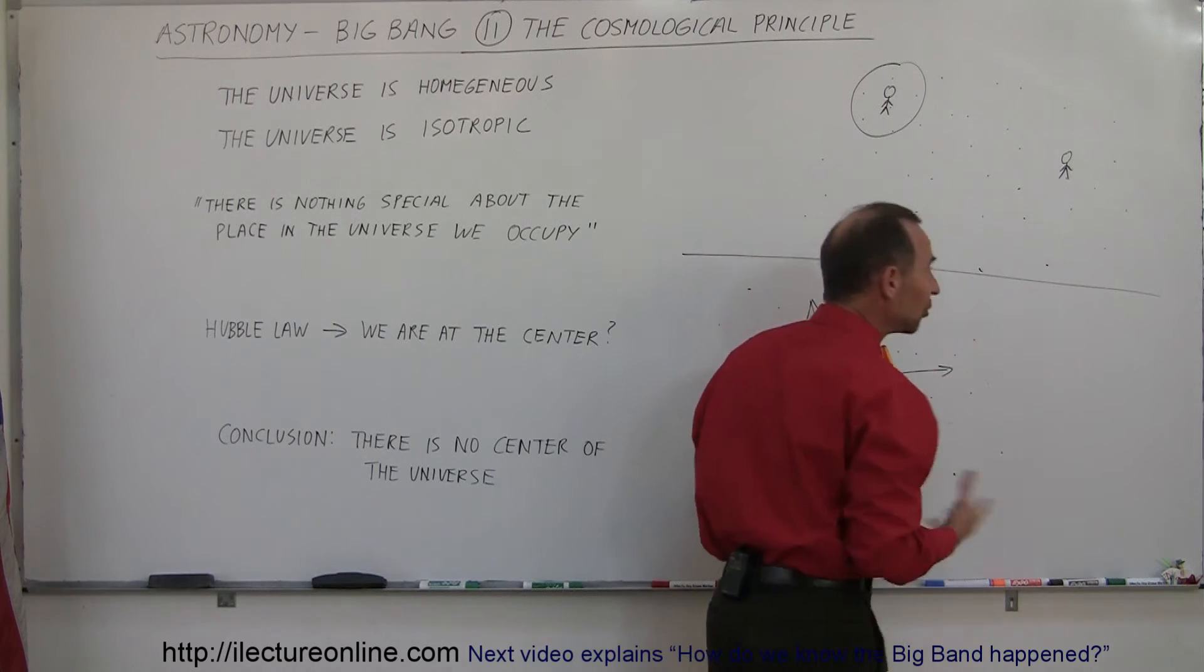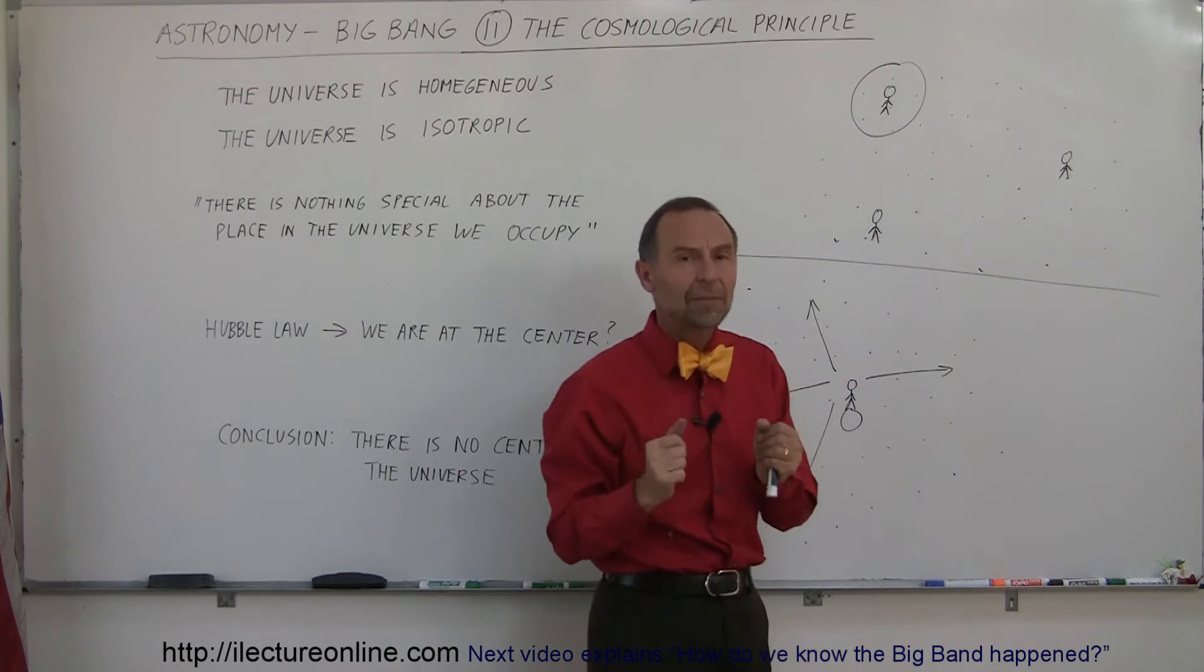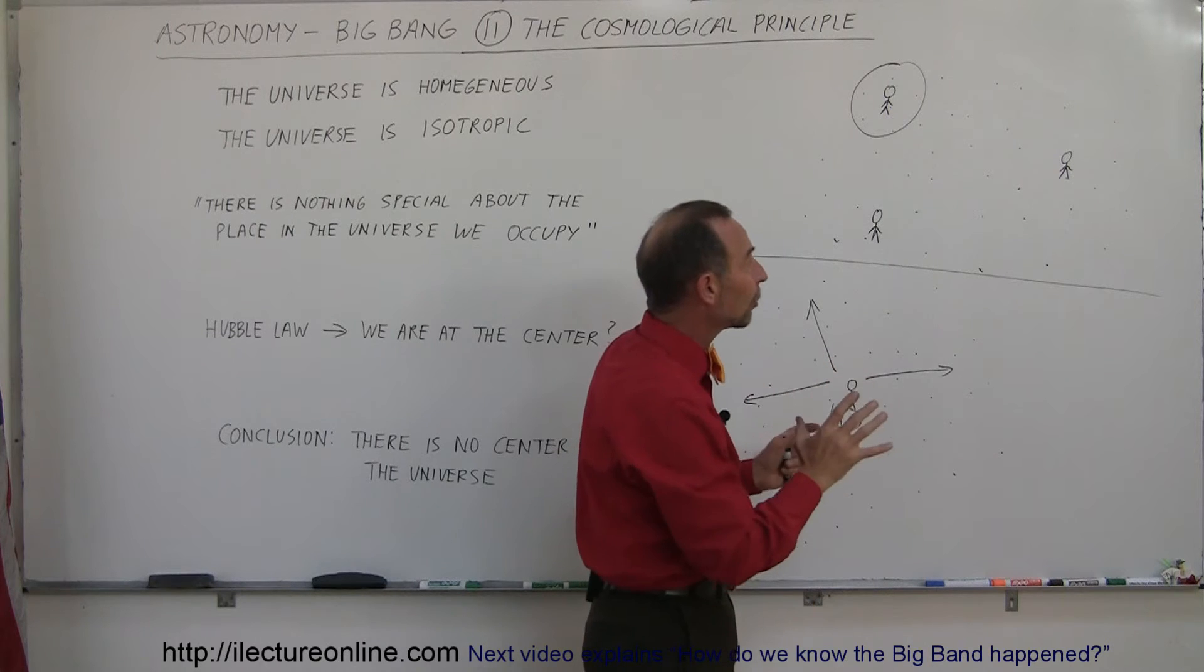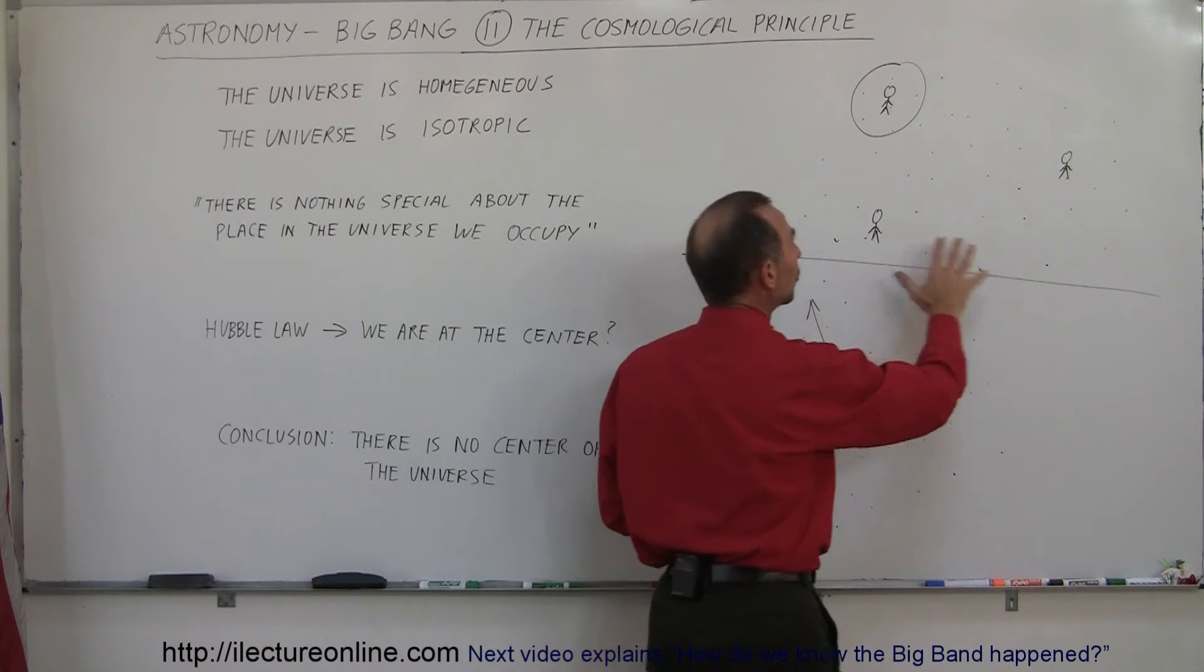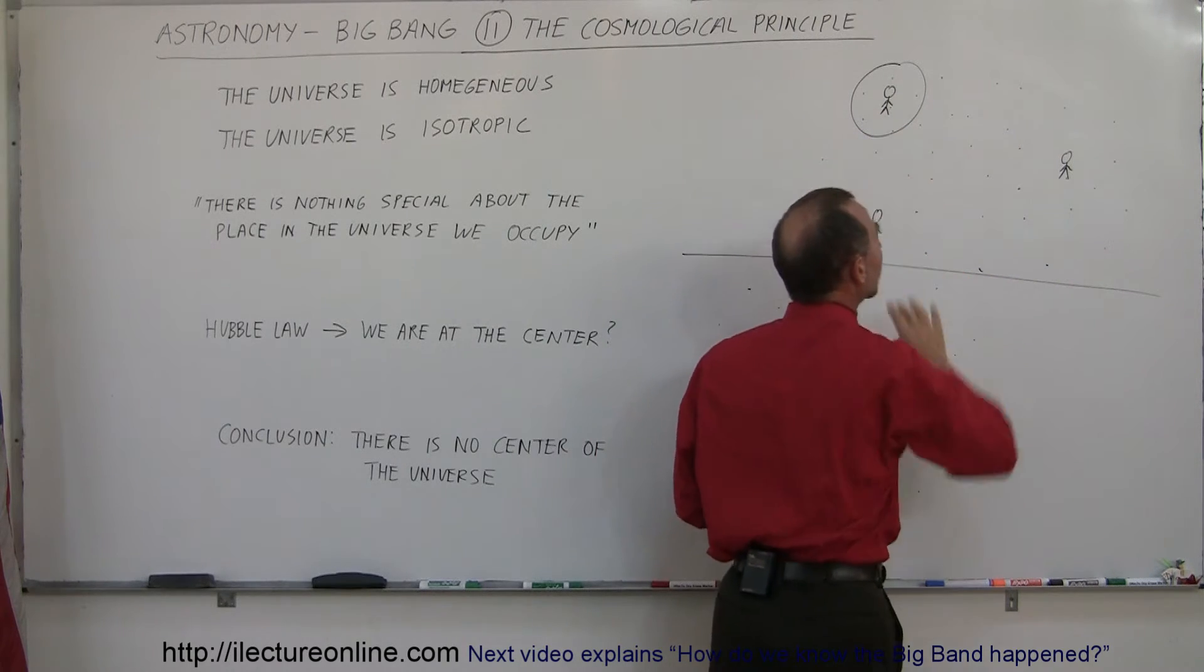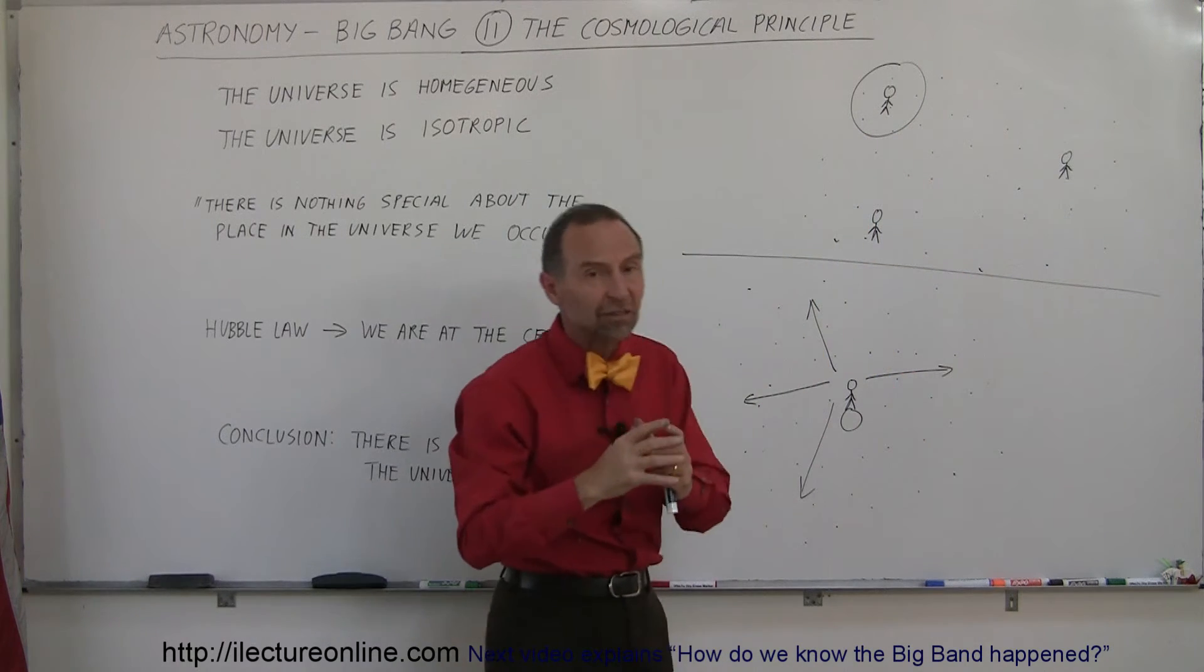And then you move to a different place, you look around and say, the universe looks the same everywhere we look. So what it appeared was that the universe was indeed homogeneous, that there was no special region in the universe that looked different from any other regions.